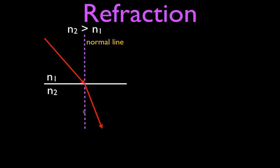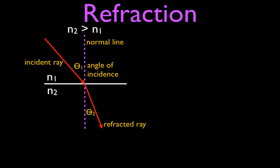There are some important parts of this diagram you need to know the names of. The upper ray is called the incident ray because it is coming in to the boundary. The angle is called the angle of incidence. After it crosses the boundary, we call this ray the refracted ray and we call this angle the angle of refraction. Those are four important things you should be able to identify: both rays and both angles.